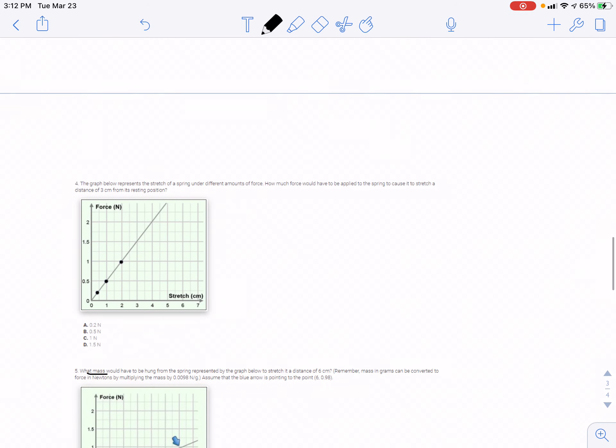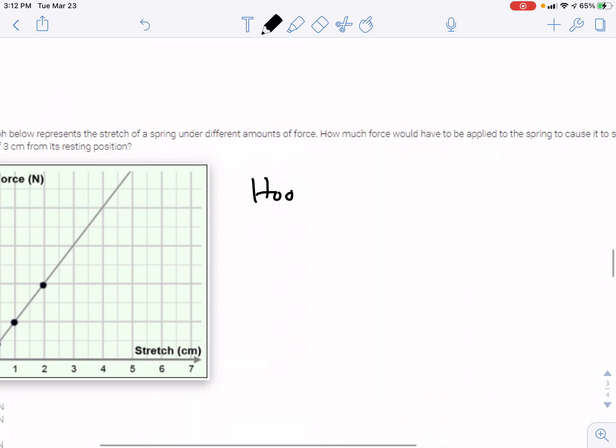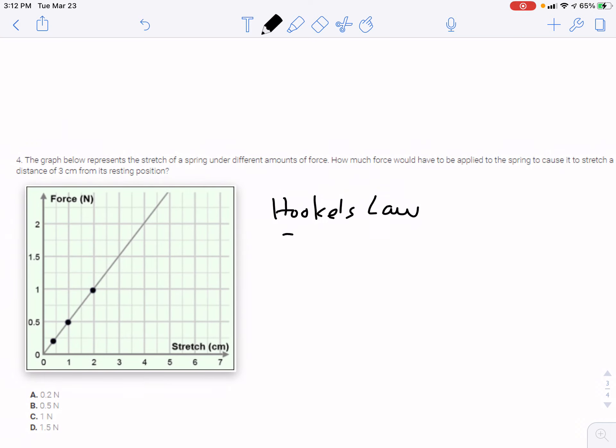Number four. The graph below represents the stretch of a spring under different amounts of force. How much force would have to be applied to the spring to cause it to stretch a distance of three centimeters from its resting position? This is another example of a Hooke's law concept. We know this because the graph is relating spring force and displacement. Hooke's law states that the spring force is directly proportional to displacement. Specifically, directly proportional refers to the fact that the data lines up linearly passing through the origin.